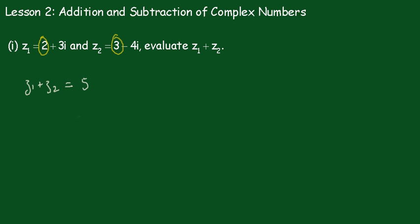And then what I'd do, I'd add the imaginary parts here together. So now 3i and minus 4i, when added together, will give me minus i.